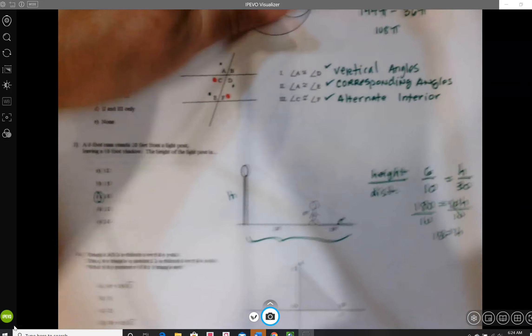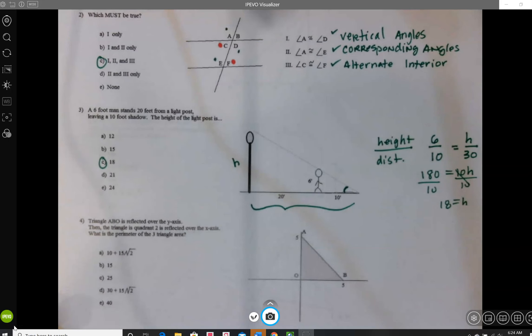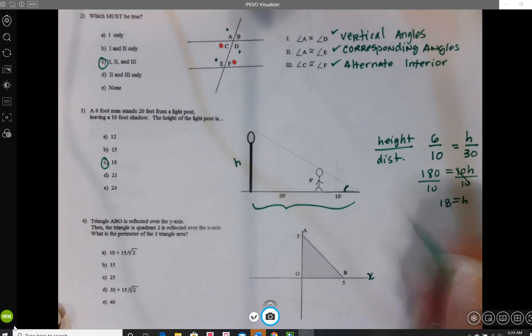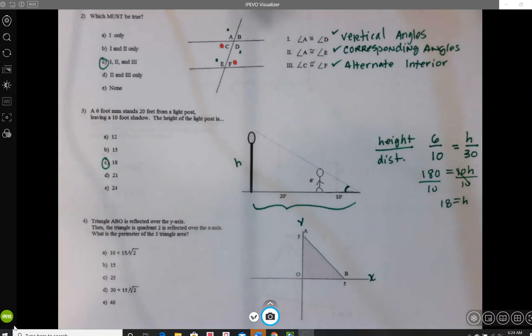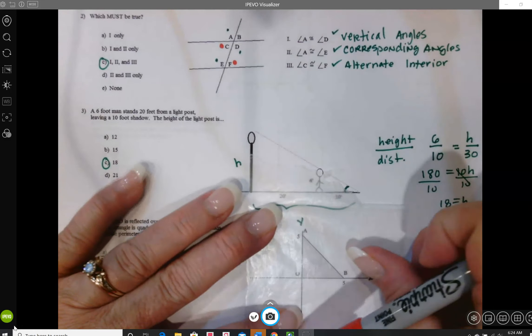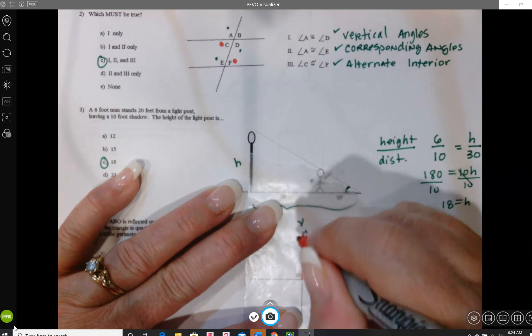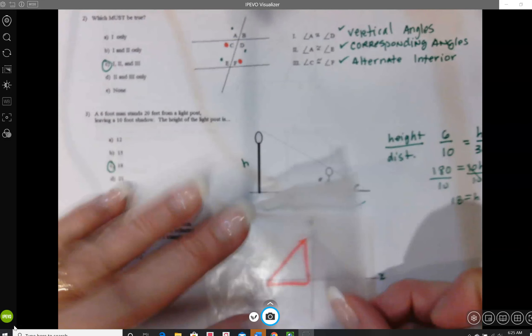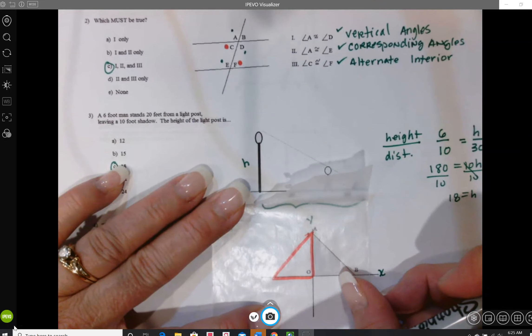And number 4, triangle ABO is reflected over the y-axis. So we've got to know a couple of things. What's a reflection, and what is the y-axis? So I'm going to label my x and my y, and then my reflection is going to be a flip over the axis. So it looks like we need a perimeter of the three-triangle area. So just to help visualize, I'm going to get out a piece of my wax paper, and I'm going to trace my triangle here. And so it's an isosceles triangle. So when I flip it over the y-axis, that's going to go there.